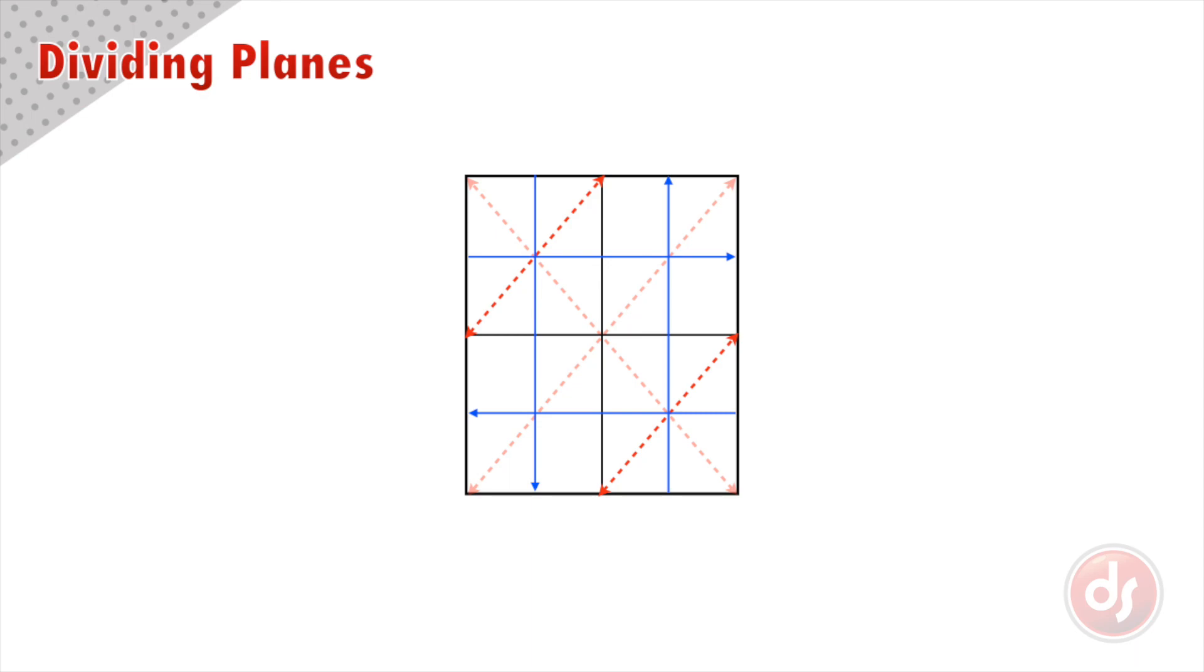Notice that we didn't have to do the X-trick on each of the four squares. By dividing the top left and bottom right, gave us the divisions for all four squares.